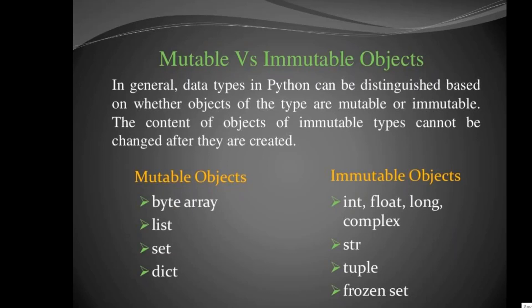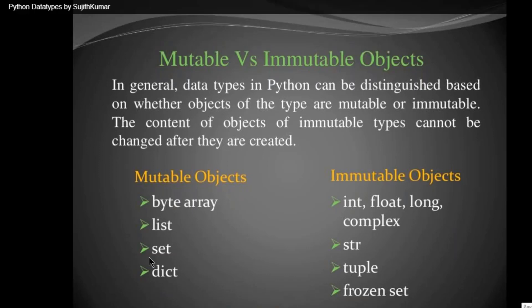If you want to check where a variable is stored and what its identity is, you can use the function called ID. For mutable objects, you have byte array, list, set, and dictionary — four variable types where you can change values dynamically.